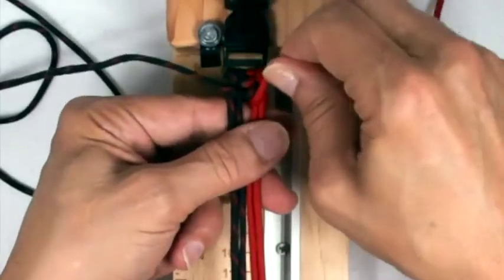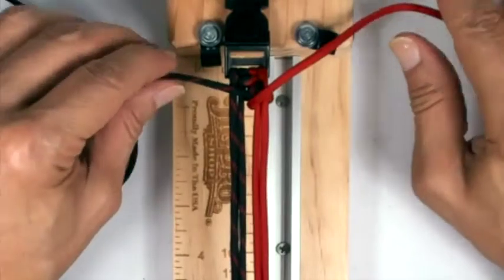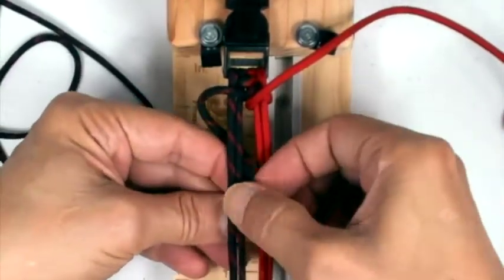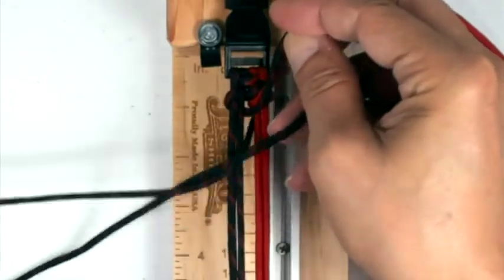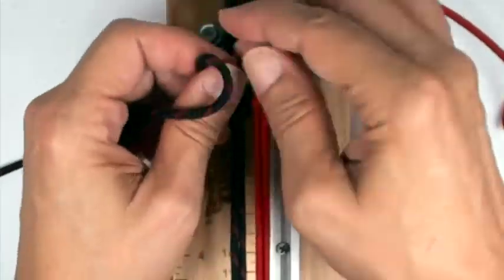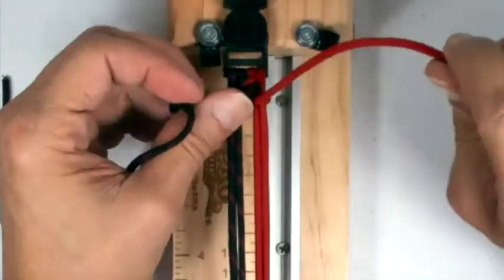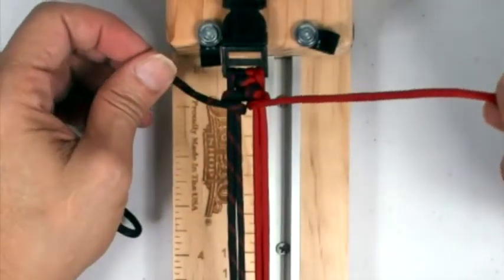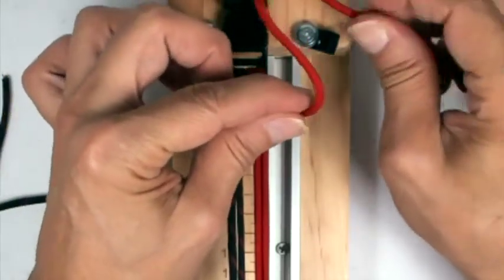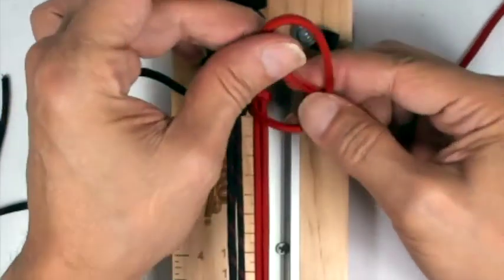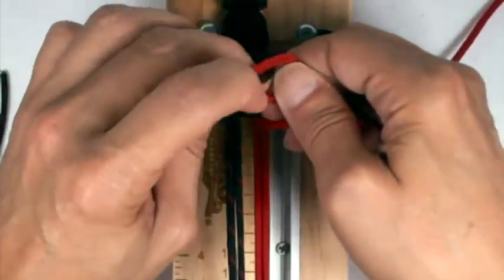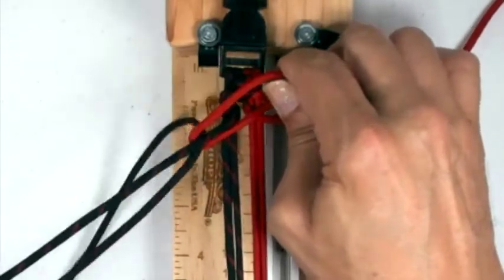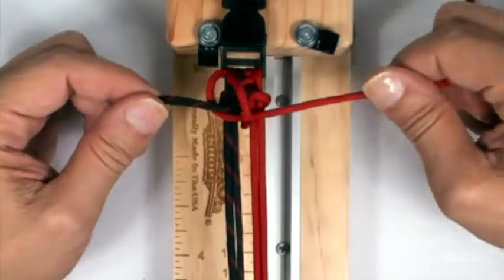Now remember, this is the first cord going in, so this is the one that's going to do the loop. We're going to go under and out the center of the core. Okay, right cord, we're going to turn towards the jig. There's our loop. We grab the left cord and we go through the loop. And pull, and tighten.